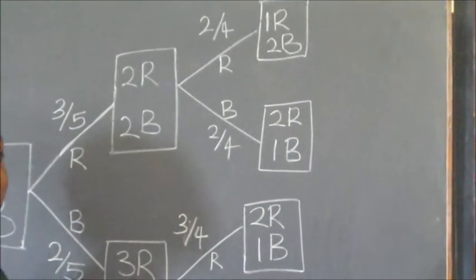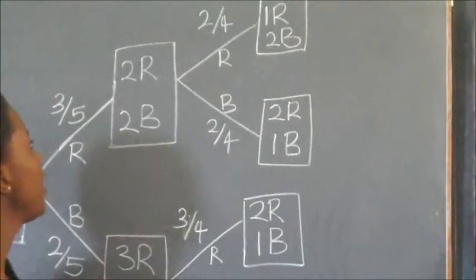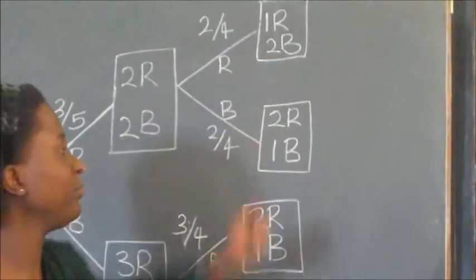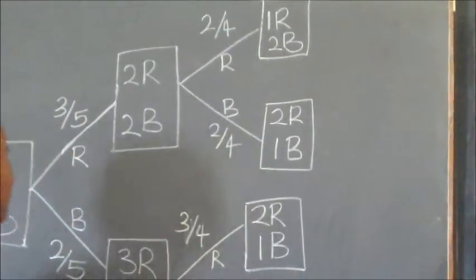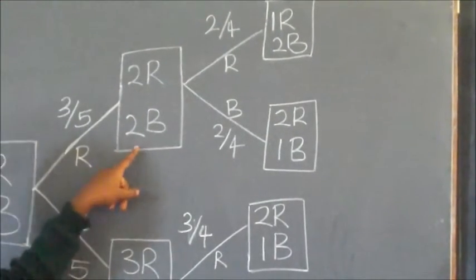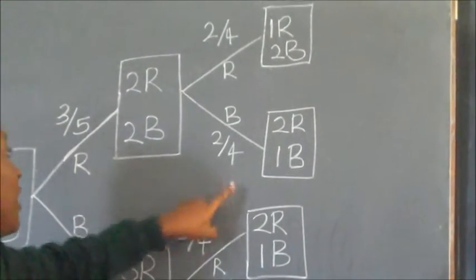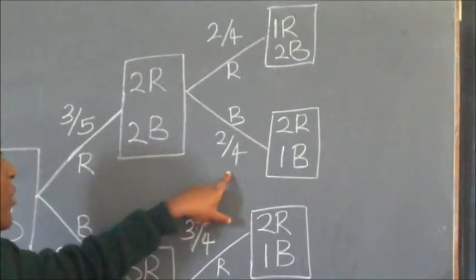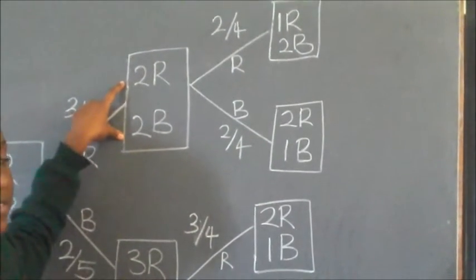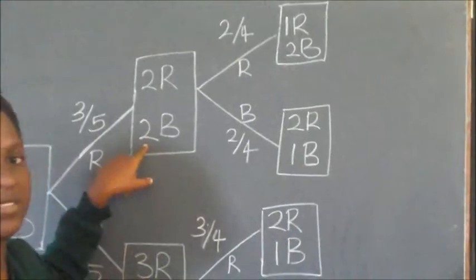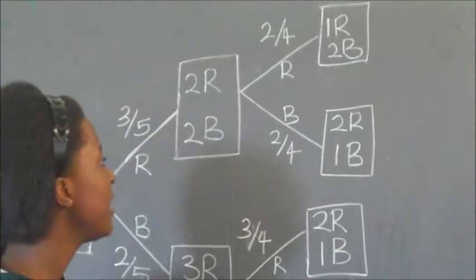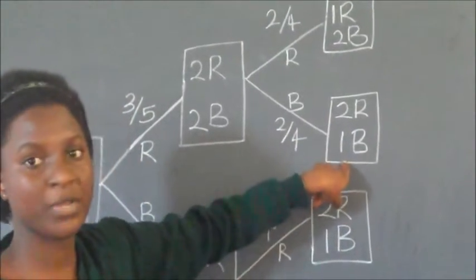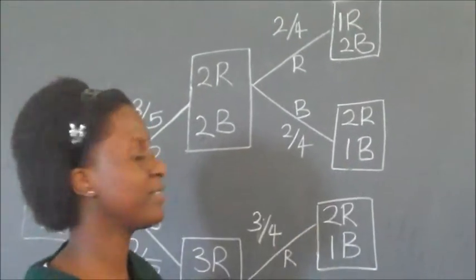Now when we have picked this red sleeper, we remain with one red sleeper and two blue sleepers. But on the second picking, we could instead pick a blue. The probability is again two out of four, because the total number of sleepers is four and there are two blue sleepers. So we remain with two red sleepers and one blue sleeper, since we are not replacing any we have picked.